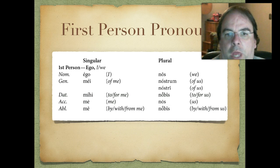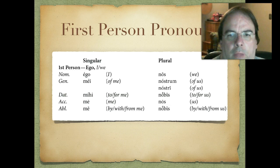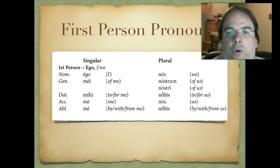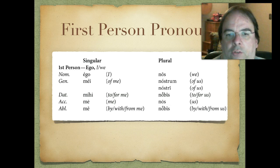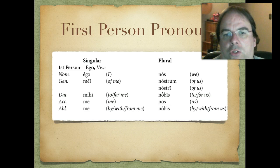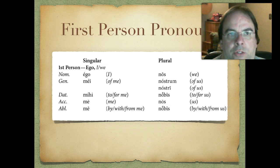When we go to the plural, we have nos, we. The genitive plural has potentially two different forms — sometimes you see it as nostrum and sometimes as nostri, both translated of us. Dative plural, nobis, to or for us. Accusative plural, nos, us. And then nobis again, by, with, or from us, for the ablative plural. So: ego, mei, mihi, me, me in the singular. Then plural: nos, nostrum or nostri, nobis, nos, nobis. One of those things you just have to memorize.